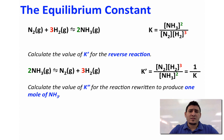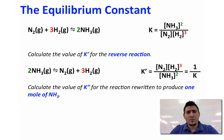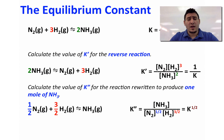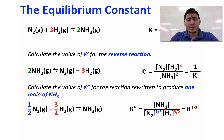Now let's find the equilibrium constant for the reaction that gives only 1 mole of ammonia. We divide the reaction by 2, giving half a mole of N₂ reacting with 1.5 moles of H₂ to give 1 mole of NH₃. The equilibrium constant expression is concentration of NH₃ divided by concentration of N₂ to the power one-half multiplied by concentration of H₂ to the power 3/2. We can see that K double prime equals K to the power one-half.